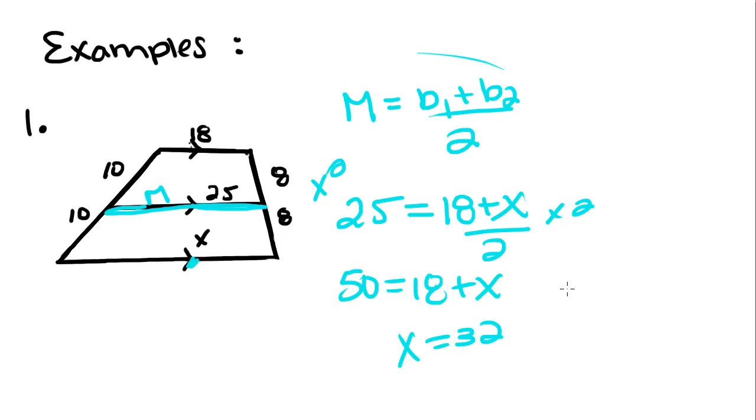And if you want to plug that back in, 32 plus 18 divided by 2, 32 plus 18 is 50, 50 divided by 2 is 25. That's just another way to double check that your answer is right.